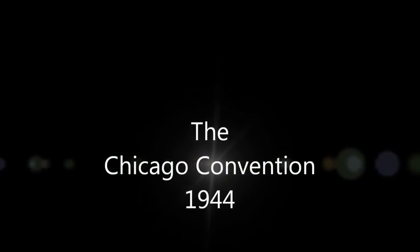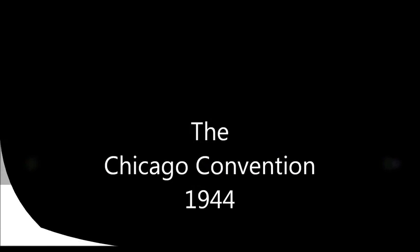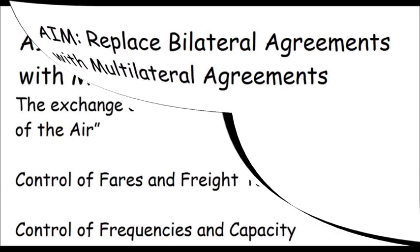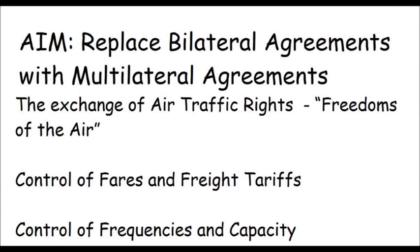The Chicago Convention was signed in 1944. The aim of the convention was to replace bilateral agreements with multilateral agreements. These included the exchange of air traffic rights, the freedoms of the air. Also discussed were the control of airfares and freight tariffs. The last item on the agenda was the control of frequencies and capacity.